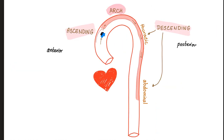Aortic dissection is a tear in the media. The media is the innermost layer of the vessel wall, and this tear will allow blood to come from the lumen of the vessel into the wall. The blood starts to accumulate and can lead to many complications, as we have discussed before.